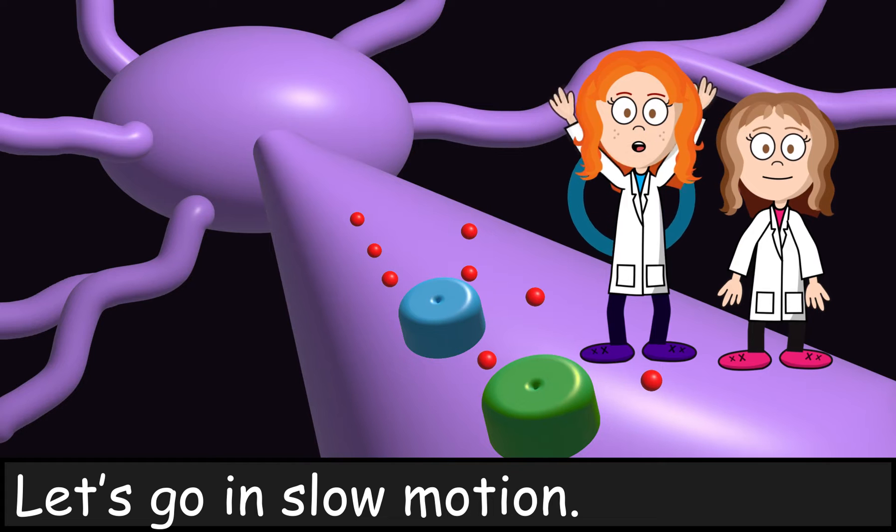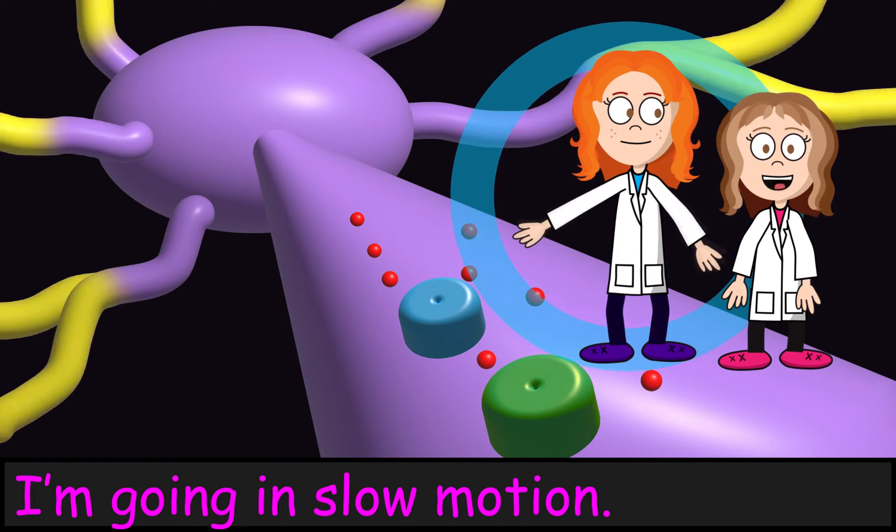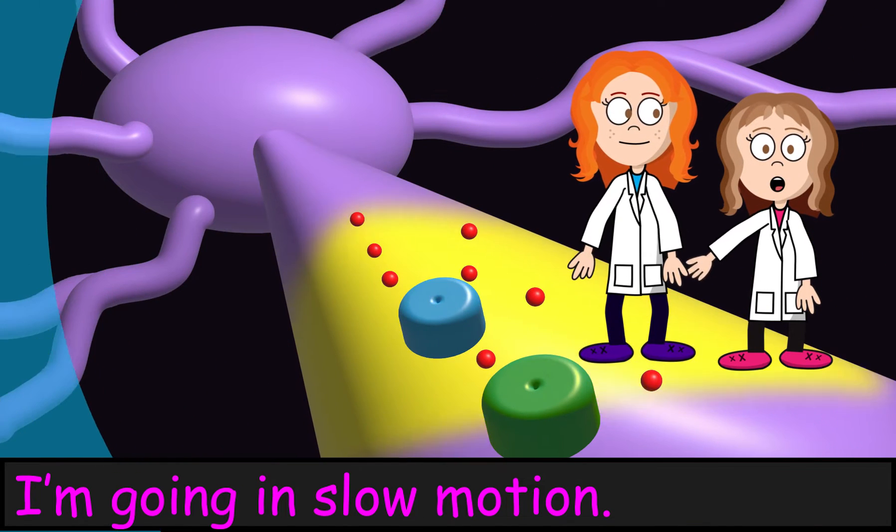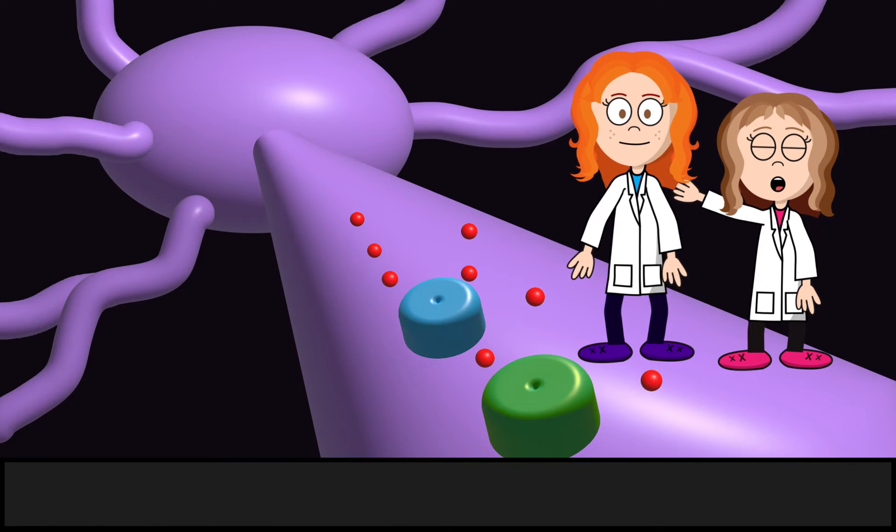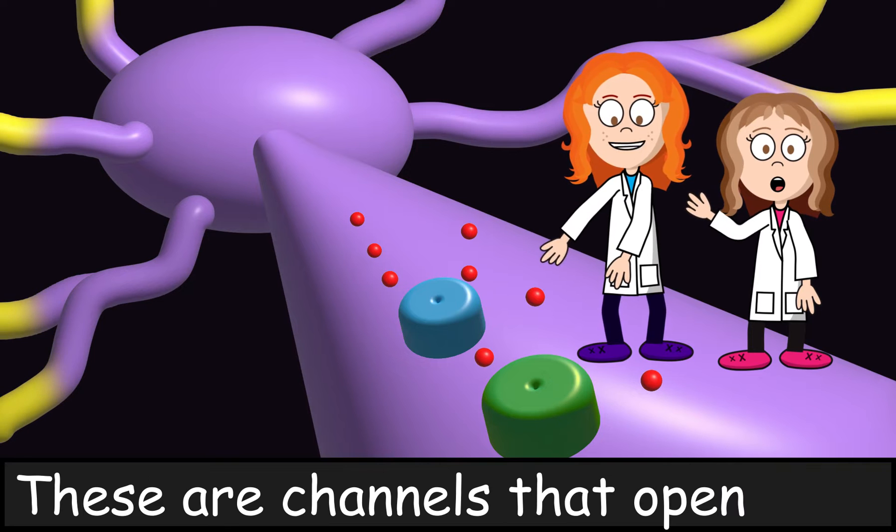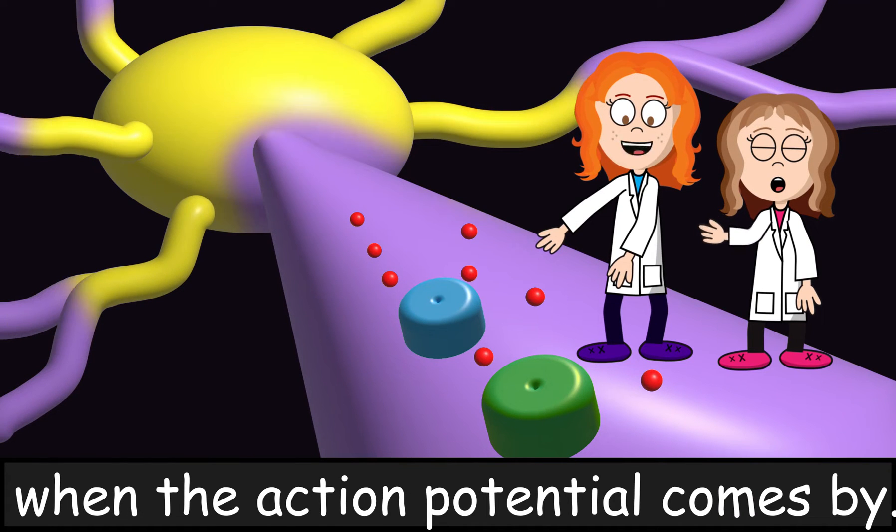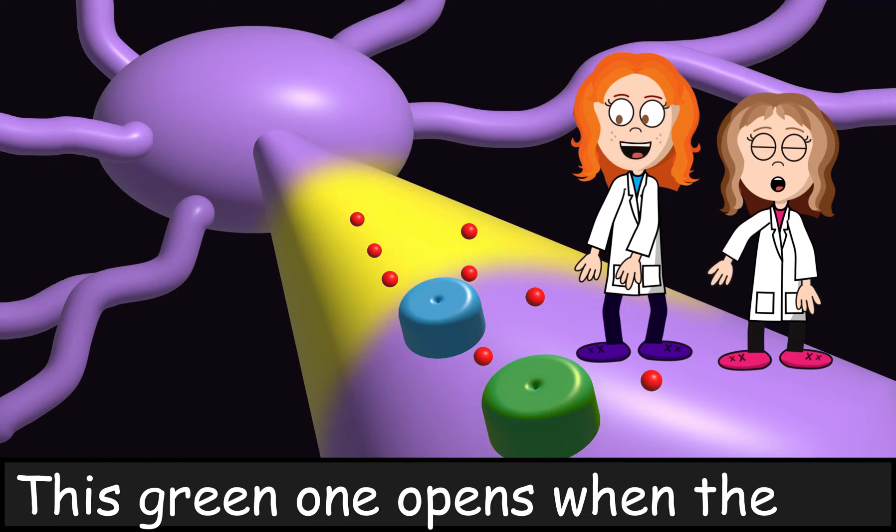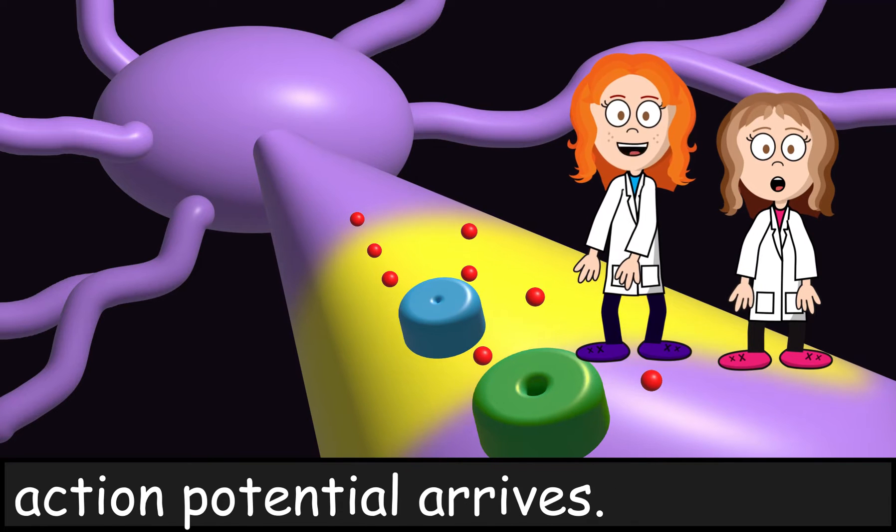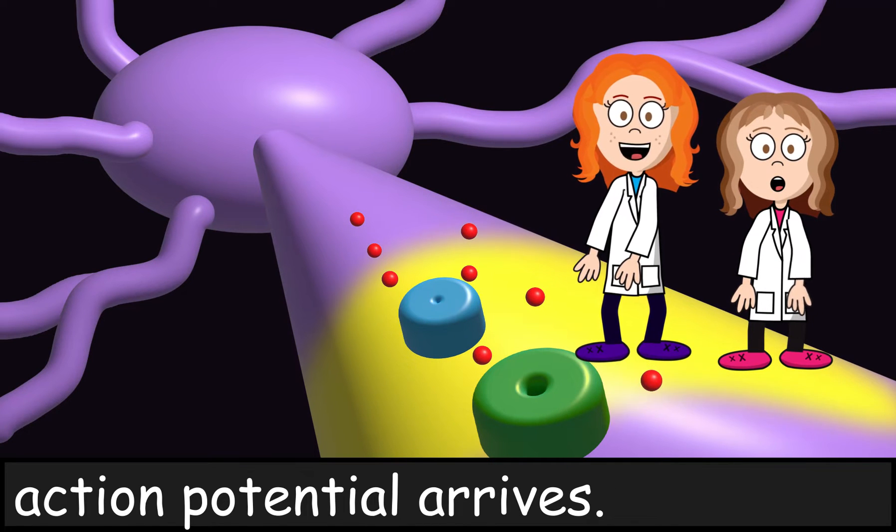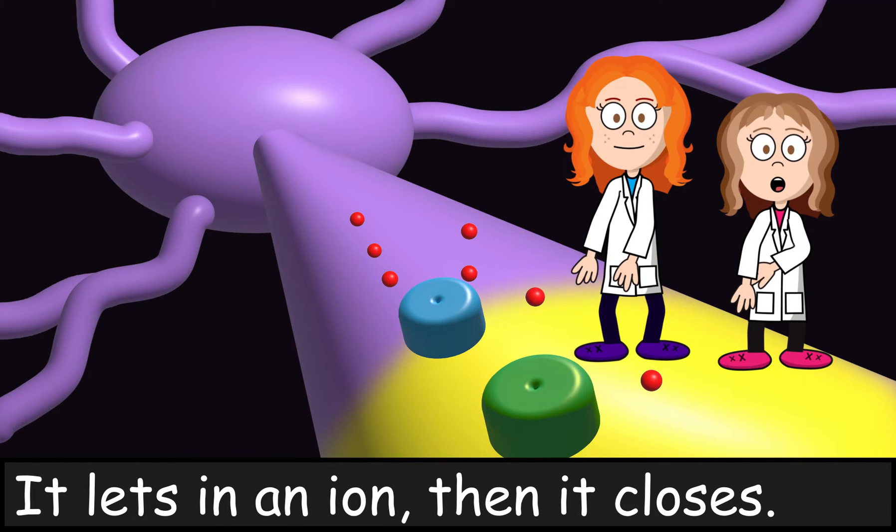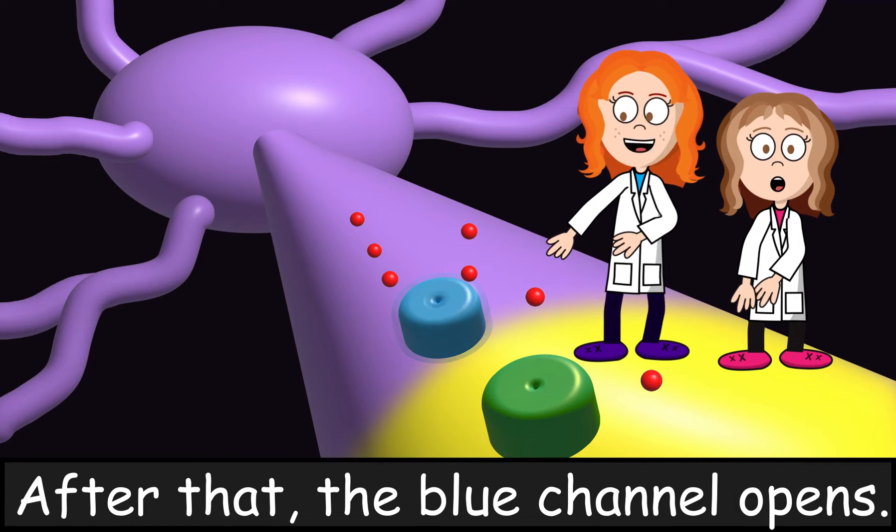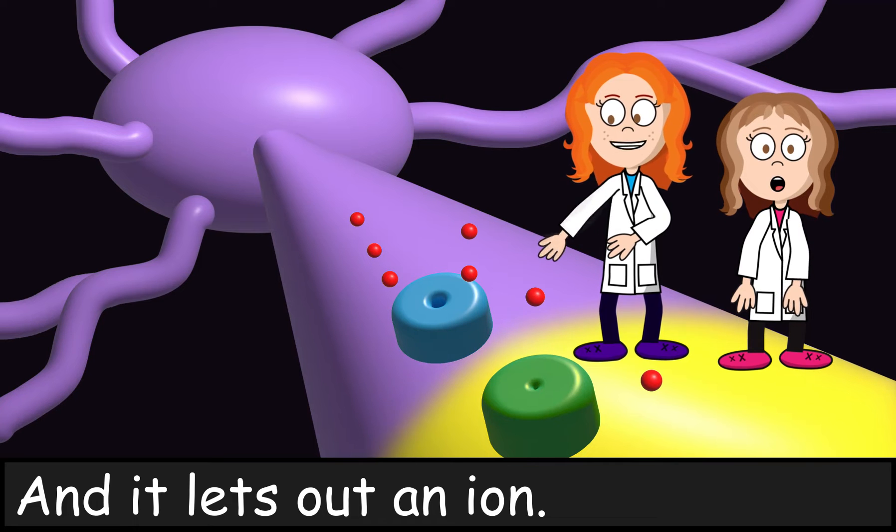Let's go in slow motion. I'm going in slow motion. Check this out. These are channels that open when the action potential comes by. This green one opens when the action potential arrives. It lets in an ion. Then it closes. After that, the blue channel opens. And it lets out an ion.